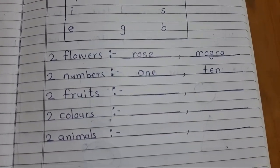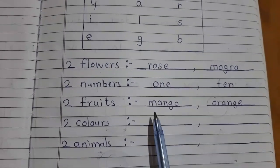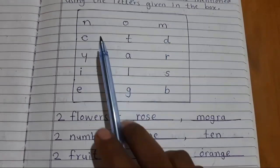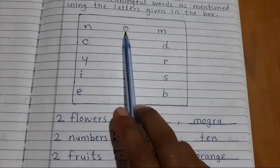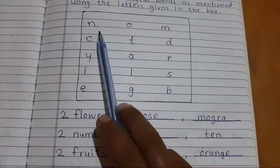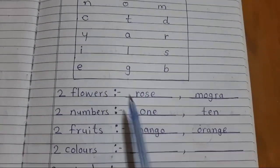Now two fruits name. Two fruits name. Mango and orange. See here. M-A-N-G-O mango and O-R-A-N-G-E orange.